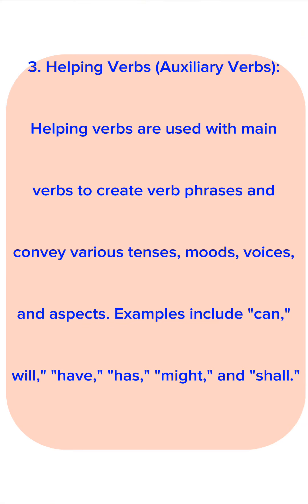3. Helping verbs, also called auxiliary verbs. Helping verbs are used with main verbs to create verb phrases and convey various tenses, moods, voices, and aspects. Examples include can, will, have, has, might, and shall.